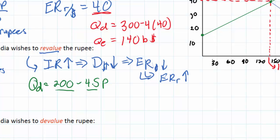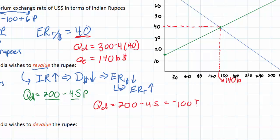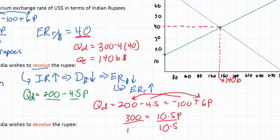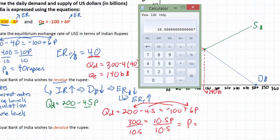What impact will this have on the equilibrium exchange rate? Let's set the new demand equation equal to the original supply equation. QD equals 200 minus 4.5P, set equal to the supply equation of negative 100 plus 6P. Moving terms: 300 equals 10.5P. Dividing both sides by 10.5, the new exchange rate — the price of the US dollar in India — is 300 divided by 10.5, giving an exchange rate of 28.57 rupees per dollar.